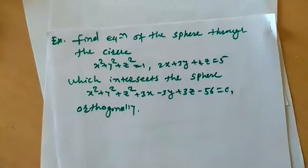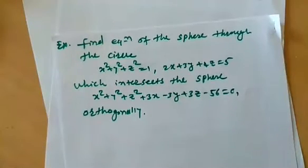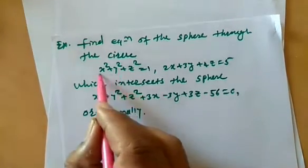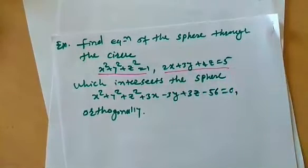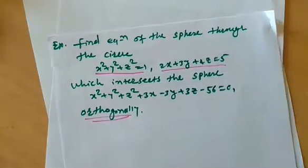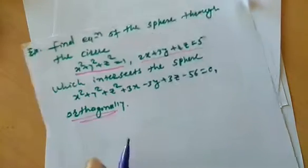Friends, continuing last article, we will try to solve one word problem based on this sphere (P-R). The problem is here: find the equation of a sphere (P-R) through the circle given in the form S equal to 0 and U equal to 0, which intersects the sphere orthogonally. I will try to write our solution in this way.